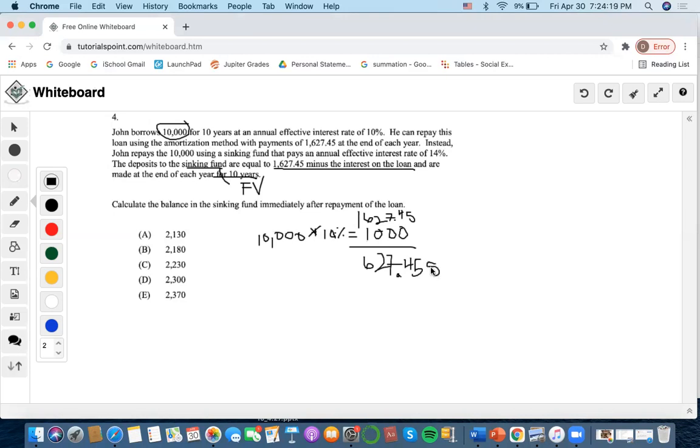The future value of it - that's an S. The future value of this amount is 10 years that pays an annual effective interest rate of 14%. Now we want to solve for the sinking fund amount at the end of 10 years. We're going to use our TVM calculator.